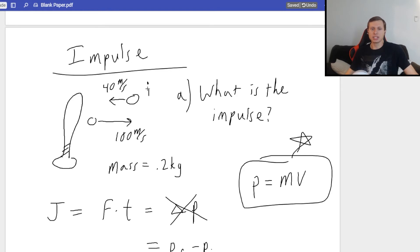So final momentum. Now we need to figure out which one's final and which one's initial. So initial I is the top, F final is the bottom. That makes sense because the ball comes in at 40, leaves at 100. Great.